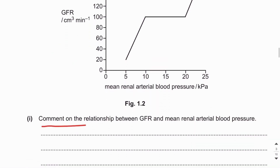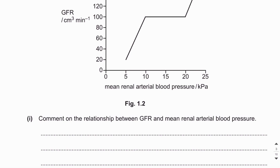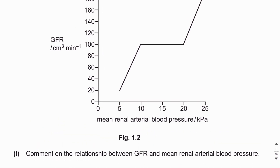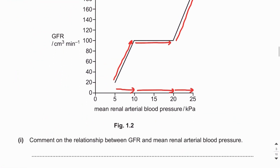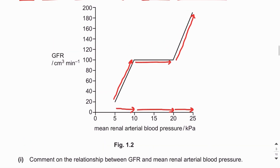The question asks us to comment on the relationship between GFR and mean renal arterial blood pressure. From the graph: when mean arterial renal blood pressure increases from 5 to 10, the GFR increases; from 10 to 20, the GFR stays constant; and from 20 to 25, the GFR increases again. So as mean renal arterial blood pressure increases, GFR first increases, then stays constant, then increases again.